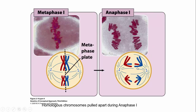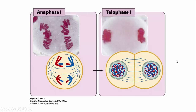In anaphase I, you get separation of homologous pairs. In telophase I, there's pinching in of the membrane and the cell starts to divide. Interestingly, in meiosis the cell doesn't completely divide like in mitosis. Rather, the nuclei never quite reform all the way, and you proceed directly into prophase II during meiosis II.